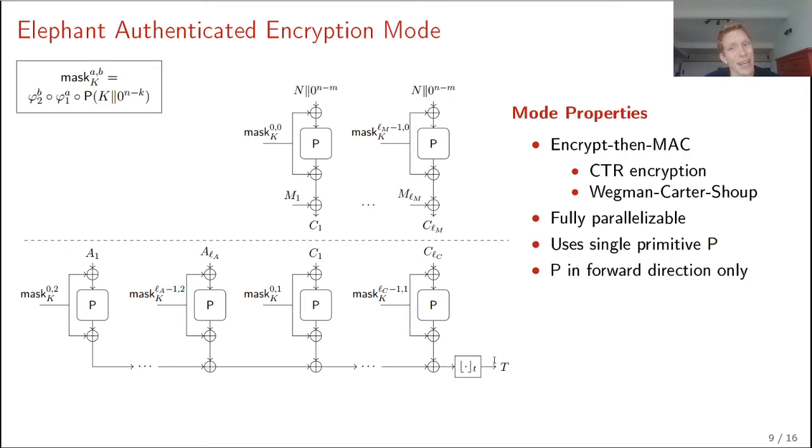The mode at a high level can be seen as an encrypt then MAC design. And this is known as the most secure version. Because this gives ciphertext integrity. So you don't authenticate the message. But instead you authenticate the ciphertext. At a slightly lower level, we see encryption consisting of counter mode. Which allows for inverse free decryption. So you don't need P inverse. The authentication consists of it can be seen as a Wegman-Carter-Shoup authenticator. The entire Elephant authenticated encryption mode is fully parallelizable. It only uses a single permutation P. And it only uses P in a forward direction.